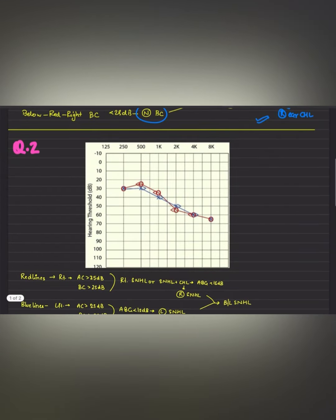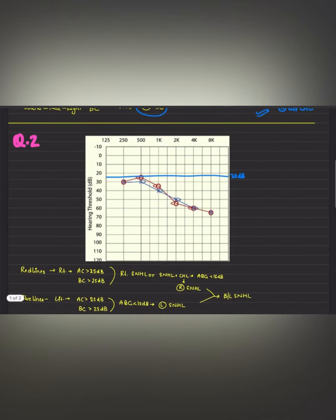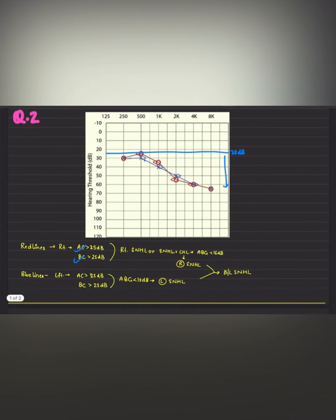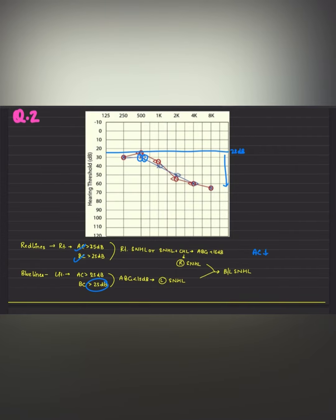Problem 2: There are two red lines and two blue lines. The red lines show both air conduction and bone conduction of the right ear are more than 25 dB. Similarly, the blue lines show both air conduction and bone conduction of the left ear are more than 25 dB. Since both air conduction and bone conduction are decreased, we check the air-bone gap. In this case the air-bone gap is almost zero as the lines are coinciding with each other, so the patient has bilateral sensorineural hearing loss.